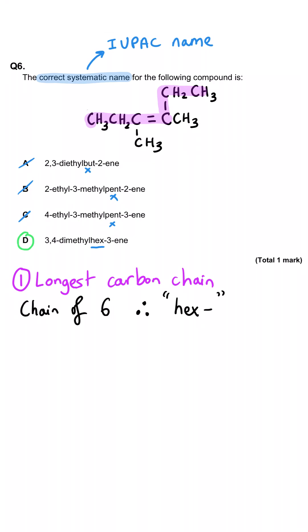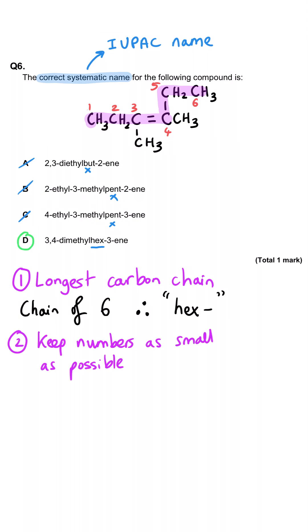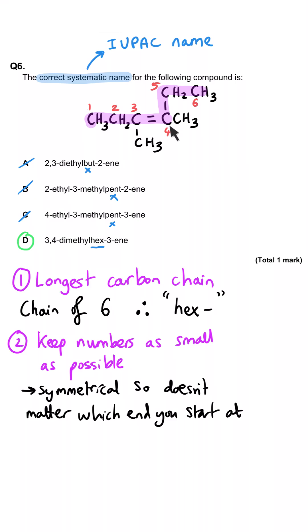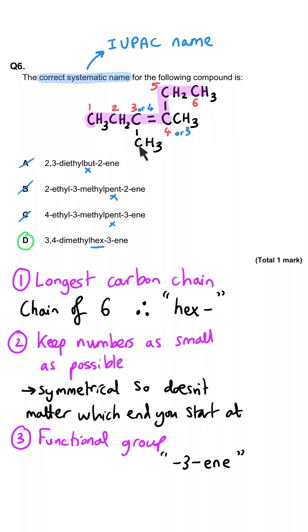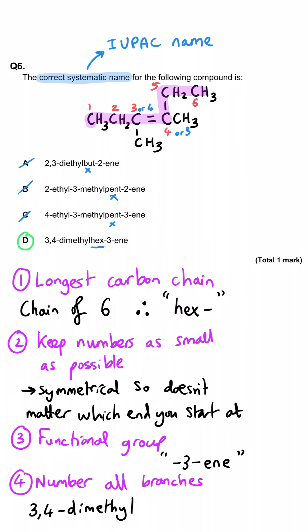So D is the correct answer — let's finish the naming. We've got a chain of six and an alkene in the middle so it's going to be hex-ene. The numbering is one, two, three, four, five, six — and this is a symmetrical molecule, so there's a methyl group on the third carbon whether we number from the right or the left. So this is hex-3-ene, and we've got methyl groups on positions three and four, giving us 3,4-dimethylhex-3-ene.